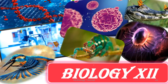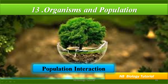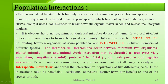Welcome back. We are going to continue the next part of this topic — population interaction. There is no natural habitat which has only one species of plant or animal. For any species the minimum requirement is food. Even a plant species with photosynthetic ability cannot survive alone — it needs soil microbes to break down organic matter and release inorganic nutrients. In nature, animals, plants and microbes do not and cannot live in isolation, but interact in myriad ways to form the biological community.